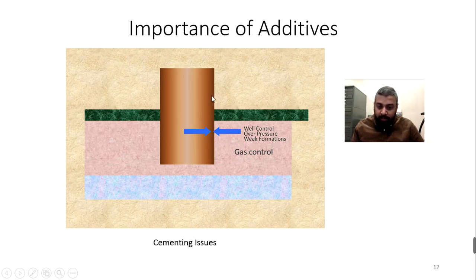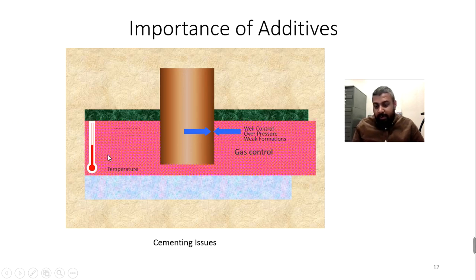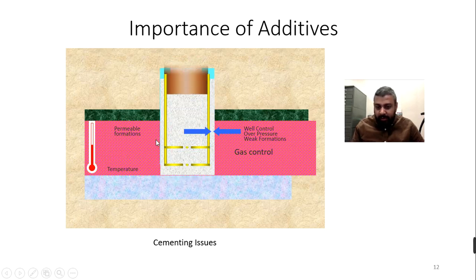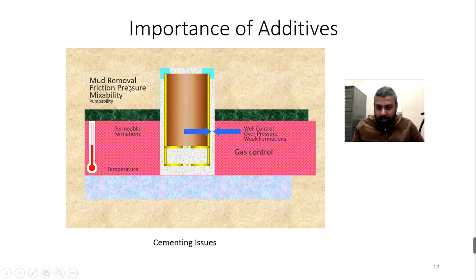There's also a chance we might end up with a weak formation, so whatever cement we inject can be lost into it. Then there's the chance of dealing with very high temperature — as your cement goes down, if it solidifies too early, you end up plugging the well rather than doing a proper cementing job. There's also the risk of freshwater formations nearby and high-pressure gas channels.